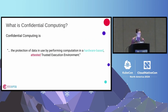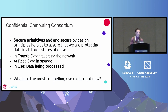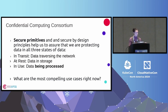I hope after 24 slides we now have a very clear understanding of what the protection of data in use by performing computation in a hardware-based, attested, trusted execution environment means. Secure primitives and secure-by-design principles help us to assure that we are protecting data in all three states — in transit, at rest, and in use — using confidential computing.